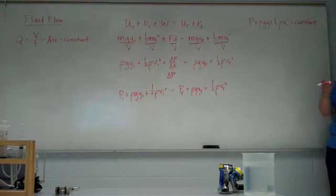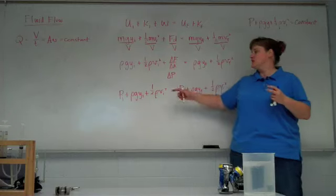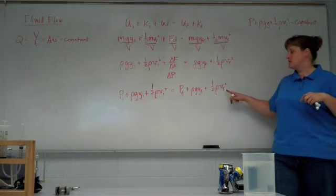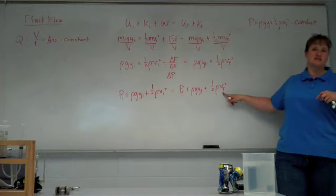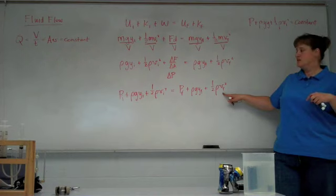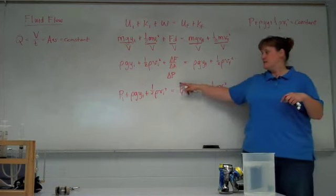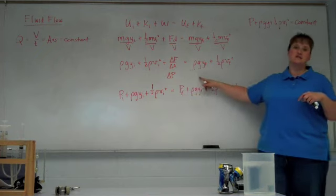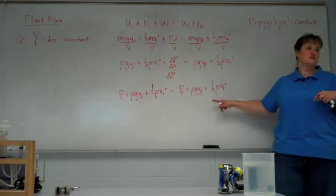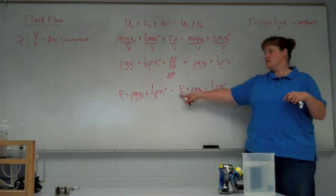It may change, for example, if the pipe narrows and the fluid is moving faster in a second part of the pipe. If this term is going to get bigger, something else has to get smaller to maintain the equality. This is what gets smaller.